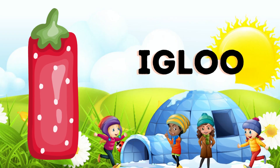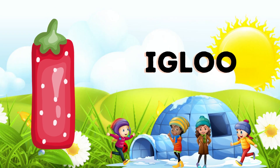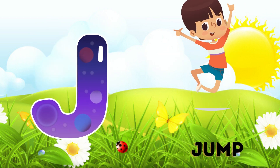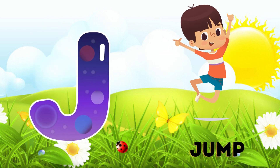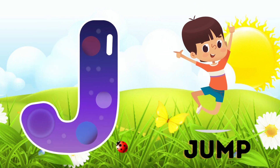I is for igloo, i-i-igloo. J is for jump, j-j-jump.